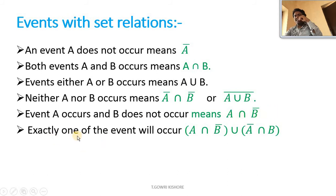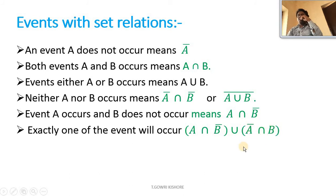Exactly one of the events will occur is represented as (A intersection B-bar) union (A-bar intersection B). Any one event will occur is represented in that same form.